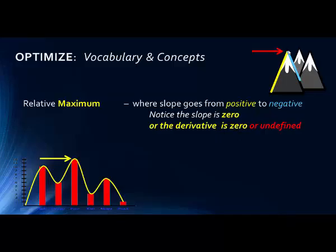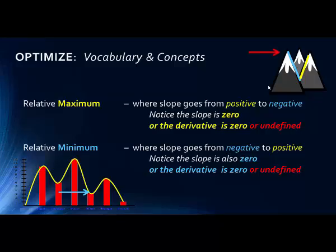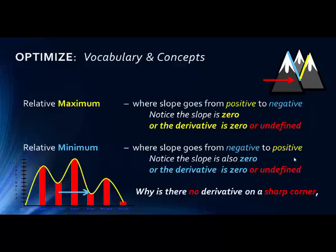A relative maximum is where the slope goes from a positive slope to a negative slope. Notice the slope is zero, or the derivative is zero, at the actual maximum, which is the peak — because going from a positive number to a negative number, we have to hit zero or a value that's undefined. Where the slope goes from negative to positive, we have a relative minimum. At the minimum value, we have a slope of zero or it's undefined.